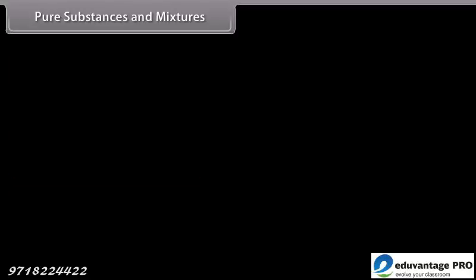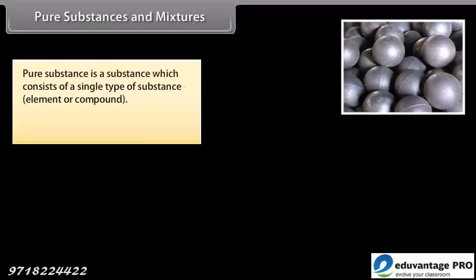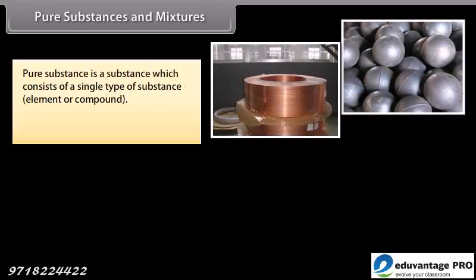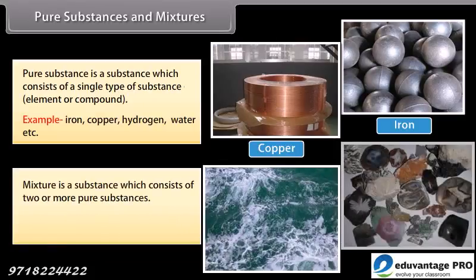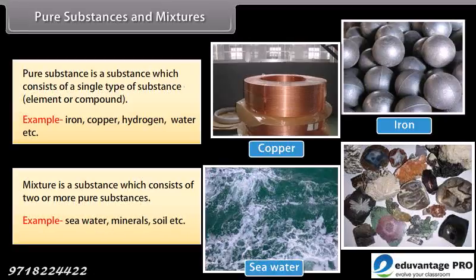A pure substance consists of a single type of substance — either an element or compound. Examples include iron, copper, hydrogen, and water. A mixture consists of two or more pure substances. Examples include seawater, minerals, and soil.